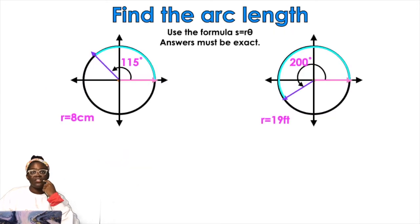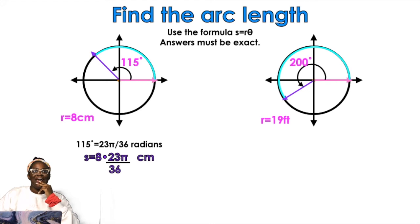So let's just look at different formats. Use the formula s equals r theta. Answers must be exact. So if I have 115 degrees, we're going to convert that to radians. 23 pi over 36 radians. That's really ugly. We're going to multiply that by the radius, which they told me was 8, and we're going to get our answer: 46 pi over 9.